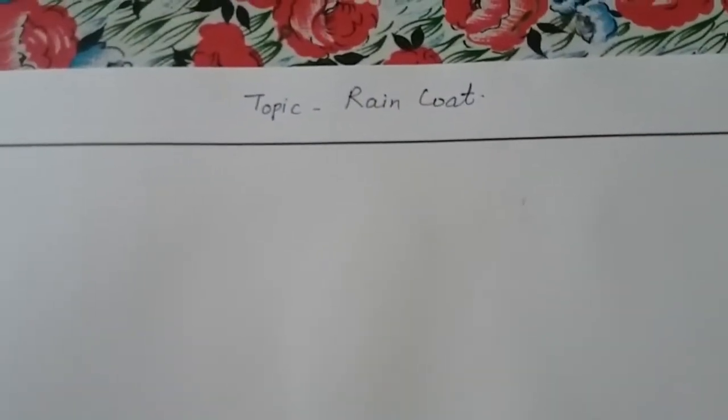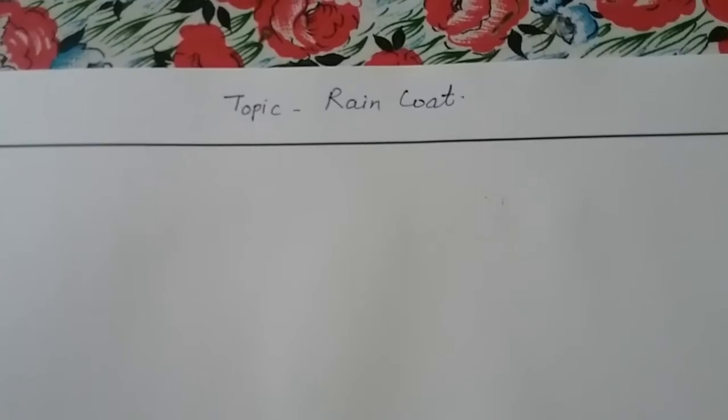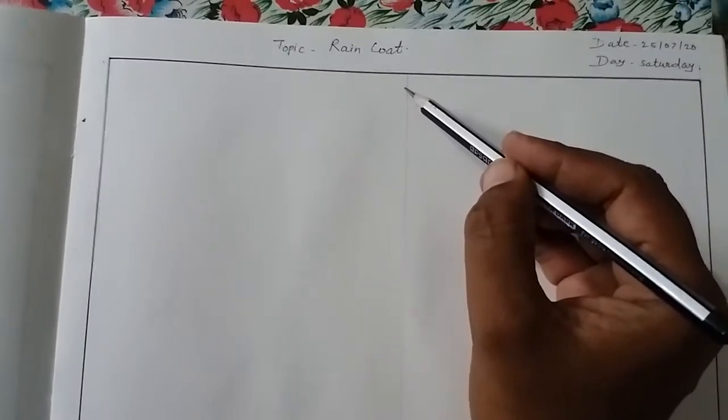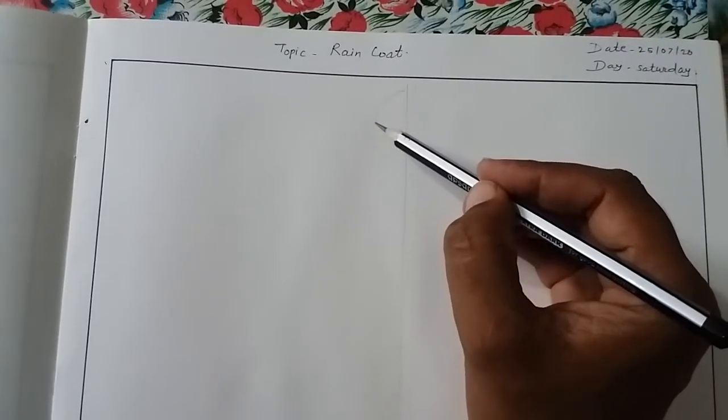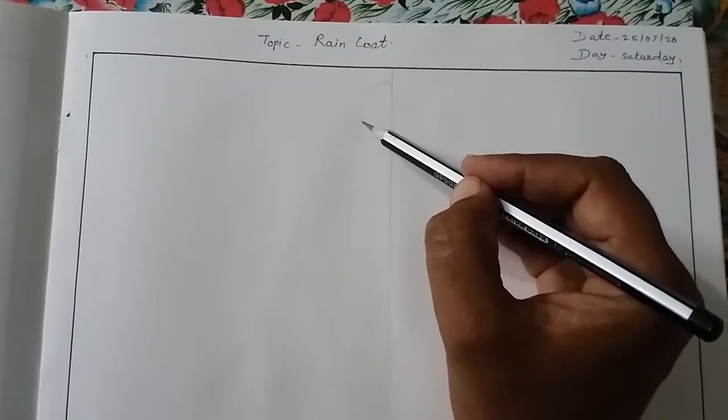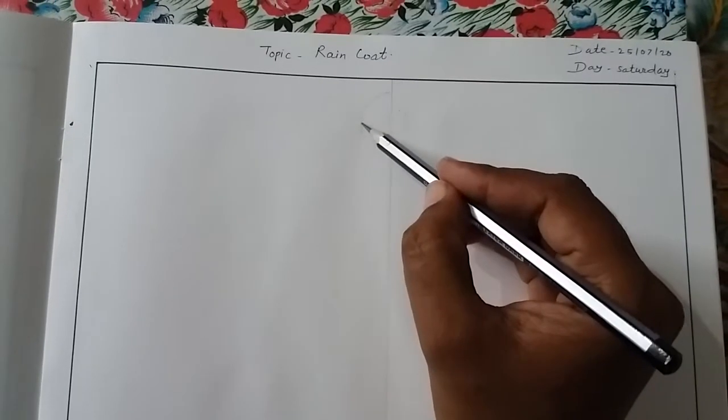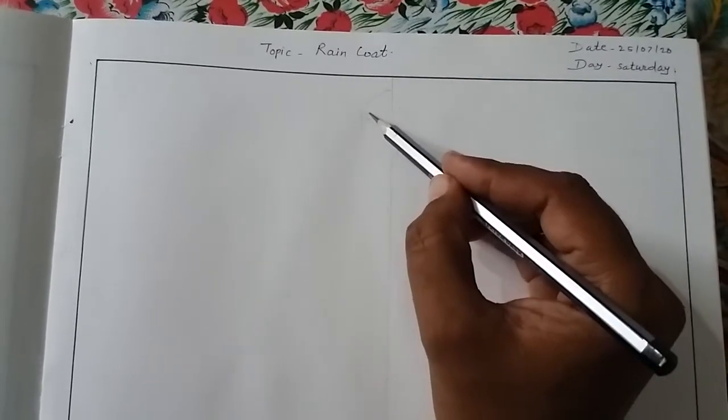you write date and day. In the middle, you write the name of the topic, raincoat. Draw these middle lines. The raincoat is the same on both sides, so you have to draw the first half side.